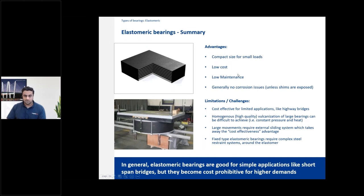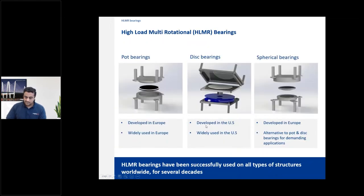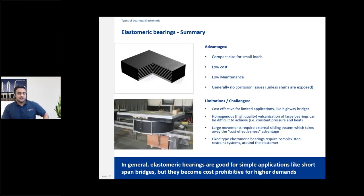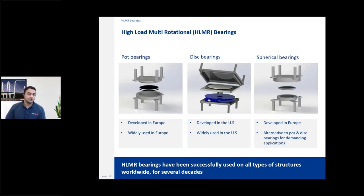Elastomeric bearings are very durable, low cost, and low maintenance, which is why they are widely used on simple highway bridge applications without corrosion issues. However, once demands become more challenging — larger loads, larger movements — they are no longer cost effective. Larger elastomeric bearings are difficult to vulcanize homogeneously, large movements require external sliding systems, and making them fixed or guided requires steel restraints. When load and rotation demands increase, you need to move on to HLMR bearings.